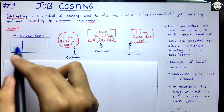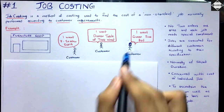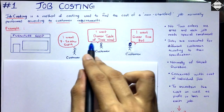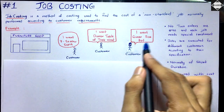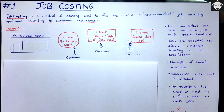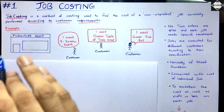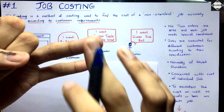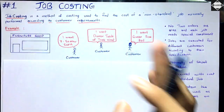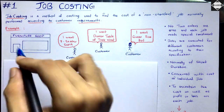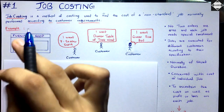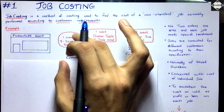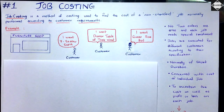Let's take a furniture shop example. We have three customers: one is asking for a seven-seater sofa, another wants a dinner table of teakwood, and the third wants a queen-size bed. These customers want specific furniture that may not be readily available, so the furniture shop will make it according to each customer's specific requirements and then deliver it.